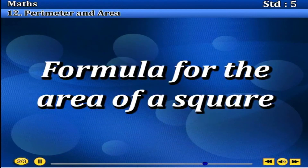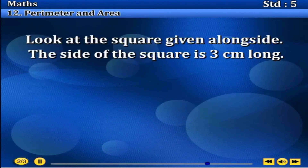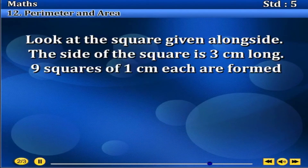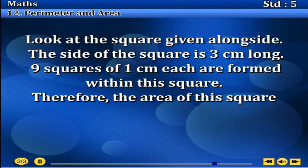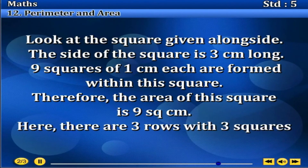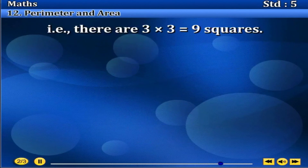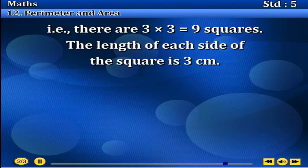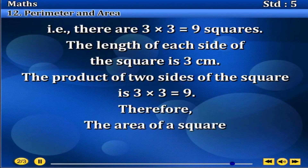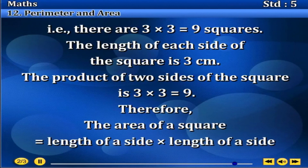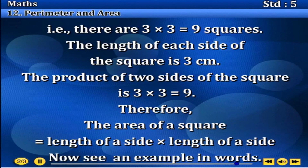Formula for the area of a square. Look at the square given alongside. The side of the square is 3 cm long. 9 squares of 1 cm² each are formed within this square. Therefore, the area of this square is 9 cm². Here, there are 3 rows and 3 squares each, that is 3 into 3 equals 9 squares. The length of each side of the square is 3 cm. The product of two sides of the square is 3 into 3, equals 9. Therefore, the area of a square equals the length of a side into the length of a side.